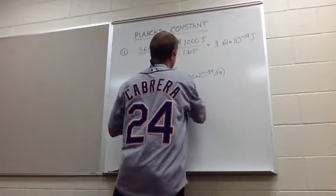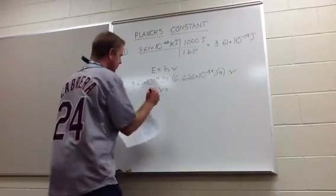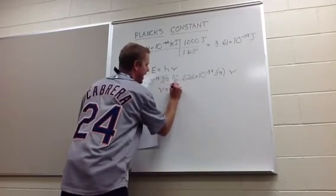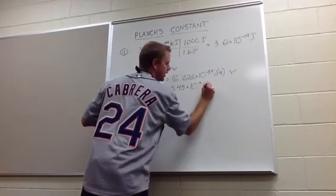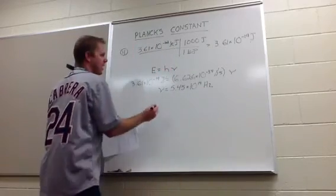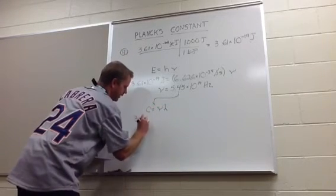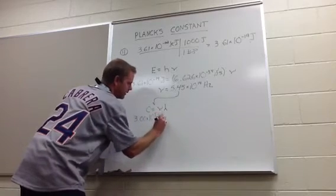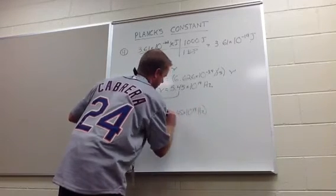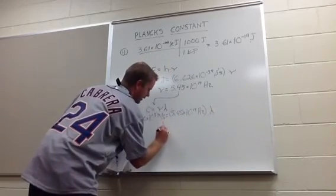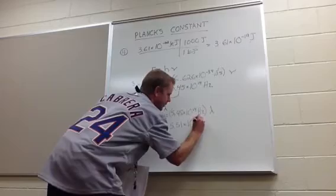Now: 3.61 times 10 to the negative 19th joules equals 6.626 times 10 to the negative 34th joule-seconds times the frequency. When you solve for frequency you have three significant figures, so your answer can have three: 5.45 times 10 to the 14th hertz. But that's not the final answer — it wants the wavelength. So: 3.00 times 10 to the 8th meters per second equals 5.45 times 10 to the 14th hertz times the wavelength. Wavelength equals, with three significant figures, 5.51 times 10 to the negative 7th meters.